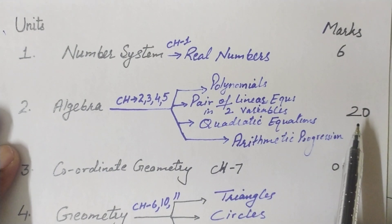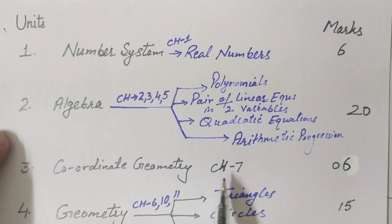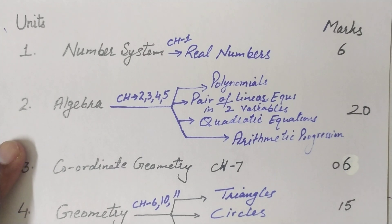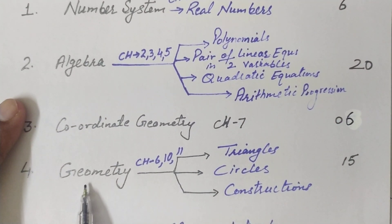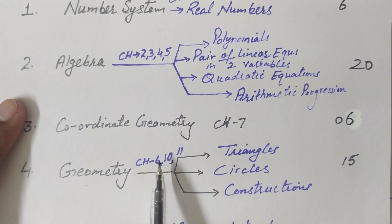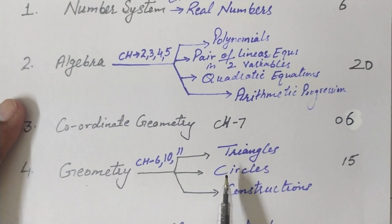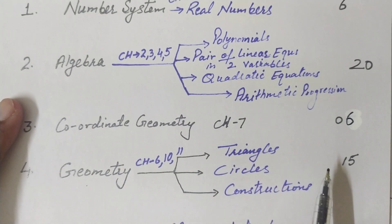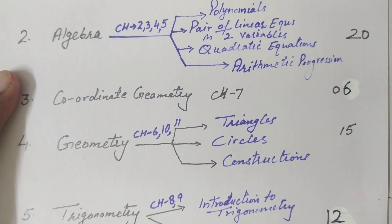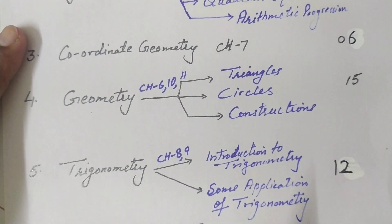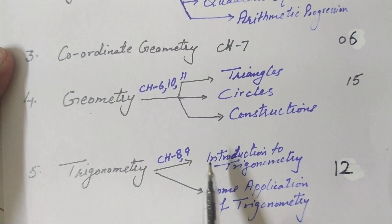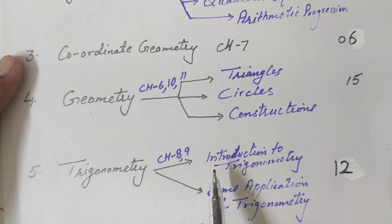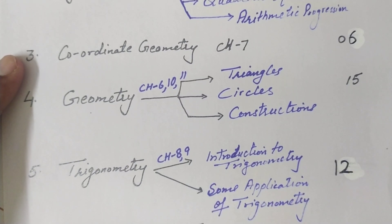Unit 3 is Coordinate Geometry — Chapter 7 — worth 6 marks. Unit 4 is Geometry — Chapters 6 (Triangles), 10 (Circles), and 11 (Constructions) — worth 15 marks. Unit 5 is Trigonometry — Chapter 8 (Introduction to Trigonometry) and Chapter 9 (Some Applications of Trigonometry) — worth 12 marks.